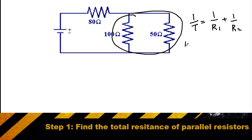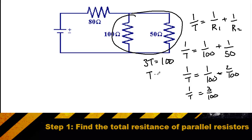So in this case, 1 over our total is going to be equal to 1 over 100 plus 1 over 50. So 1 over our total is equal to 1 over 100 plus 2 over 100. Or 1 over our total is equal to 3 over 100. When we cross multiply, we get 3t is equal to 100. Or the total resistance is roughly equal to 33 ohms.